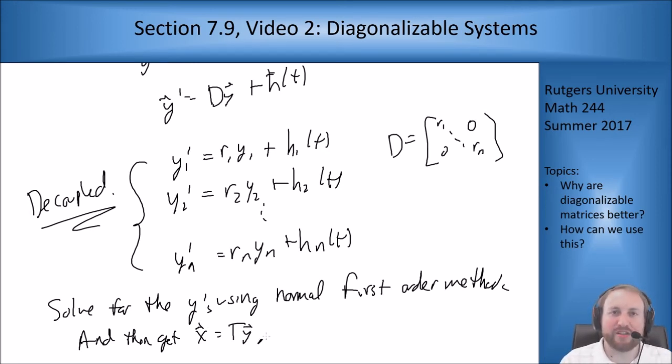So you basically use this transformation to make it diagonal which then decouples the entire system. I can then solve for my y1, y2, up to yn individually using normal first order equation methods, and then I can just put them back together into a vector and multiply by matrix T to get my x back.